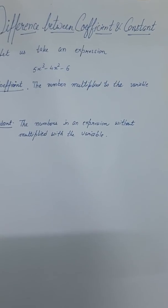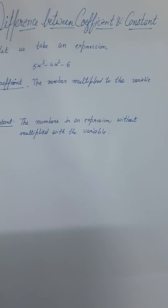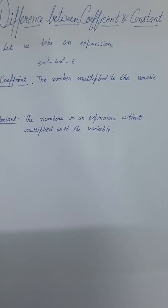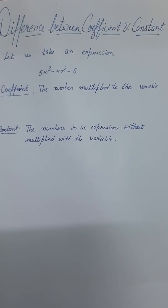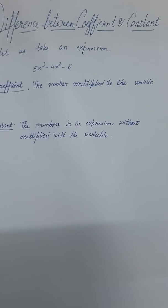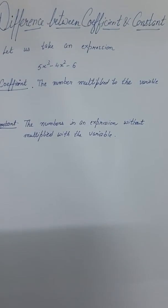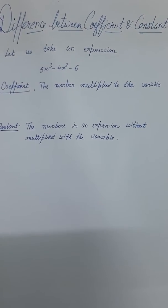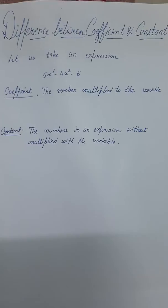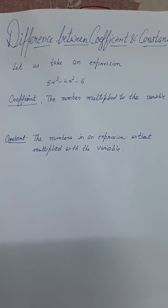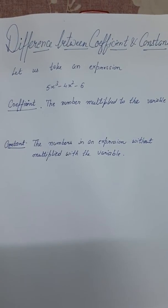Hello students, this is Bujapal and welcome to my channel. Today I am going to discuss the difference between coefficients and constants. Both are numbers, but coefficients are the numbers multiplied to the variable in an expression, and constants are the numbers in an expression which are not multiplied to the variable.